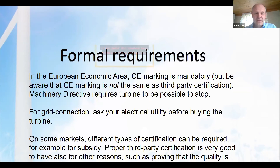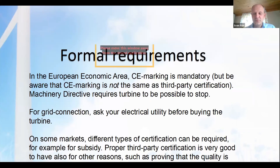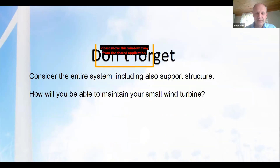For grid connection, ask your electrical utility before buying the turbine — they will have certain requirements if you are going to connect to the grid, even if it's on your side of the meter. For some other markets, different types of certification can be required, for example for subsidy. Proper third-party certification is very good to have also for other reasons — in Sweden you sometimes need to prove to officials that the quality is sufficient, and then the certificate can be very helpful. Also, don't forget to consider the entire system including the support structure, which some wind turbine manufacturers tend to overlook.